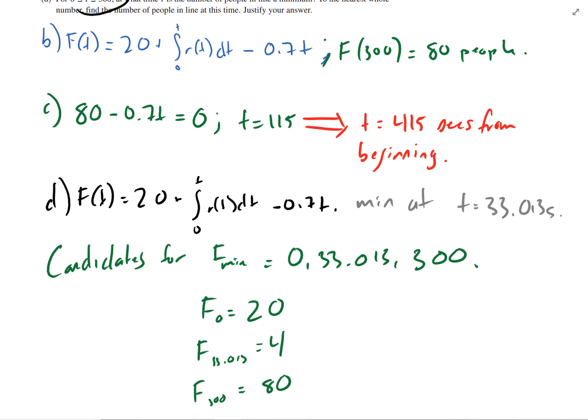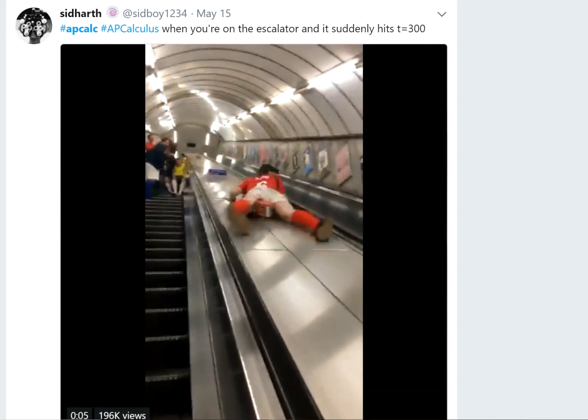So because of the candidates test, we can justify that min occurs when T equals 33.013 seconds. Ta-da! And now that we've finished the problem and justified it, we're going to look at some of the memes for the problem. Part one,